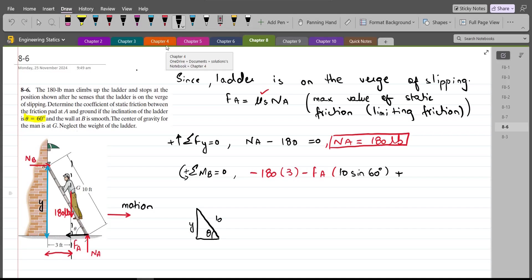Now this NA force is trying to rotate the ladder in counterclockwise direction about point B. So the moment produced by this NA force will be taken as positive. And the moment arm for this NA force is this perpendicular distance.